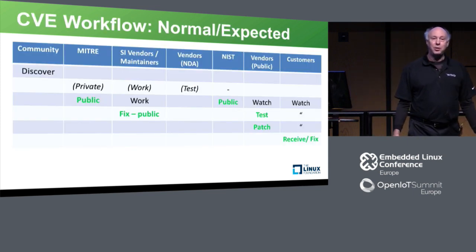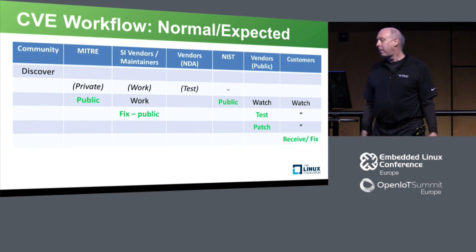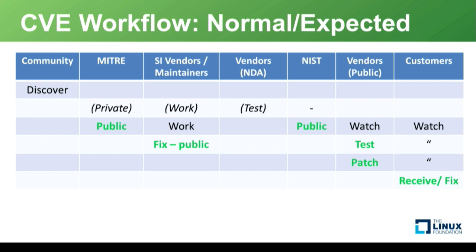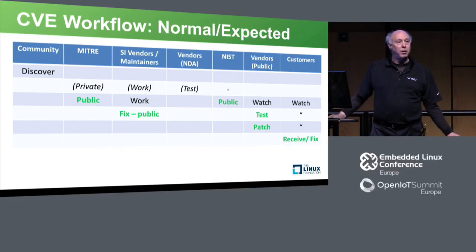The normal workflow is what we expect and pray for — very easy. The community discovers a vulnerability. There may be a step where it goes first to a private list in MITRE as a reserved CVE record, where a vendor under NDA works on it. At some point it gets moved to public in MITRE, then published to the general world in the NIST list. Vendors provide a public patch, it goes to OEM vendors who test and provide it to customers. Customers receive the fix and everything is fine.